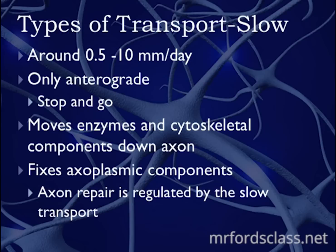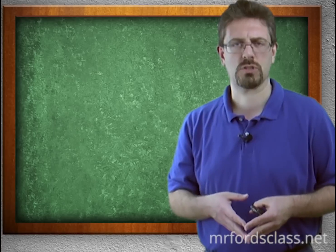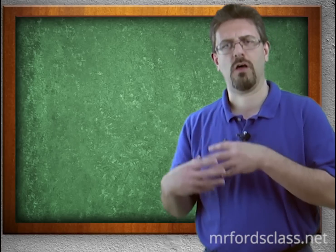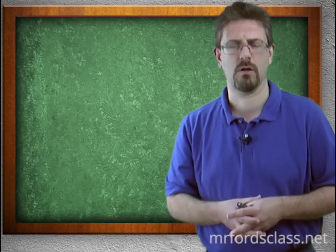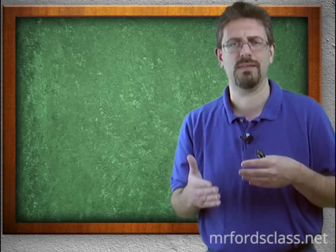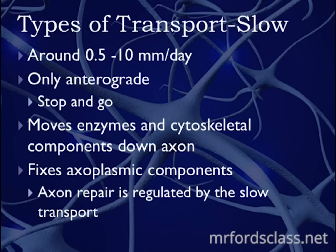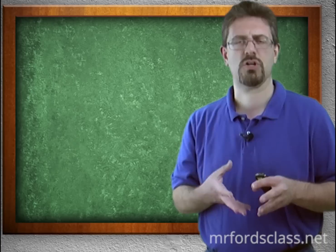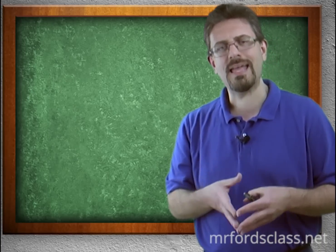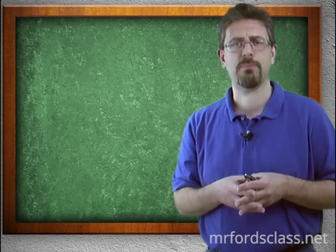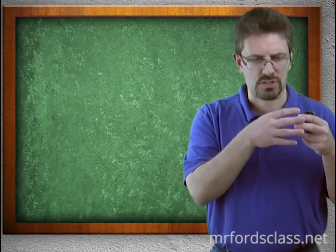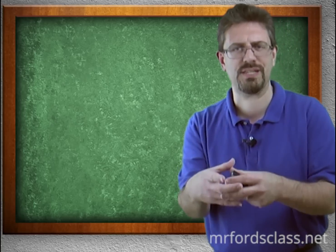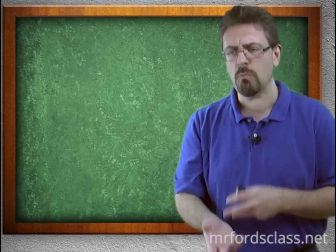Then we have slow transport, which moves around 0.5 to 10 millimeters per day. It is only antegrade and it is stop-and-go, moving from the cell body all the way down to the end of the axon. It moves enzymes and cytoskeleton components down the axon, fixes axoplasmic components, and axon repair is regulated by slow transport — it's like a little train carrying repair supplies from one station to the next down the axon.